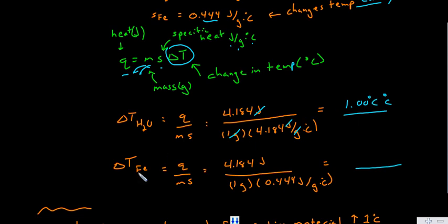Whereas with the change in temperature of iron, because it has such a small specific heat, it changes temperature easily. So actually a lot of degrees Celsius. That is, for a given amount of heat added and substance, the temperature would rise a lot. So it was 9.44 degrees Celsius.